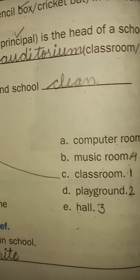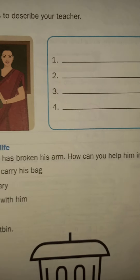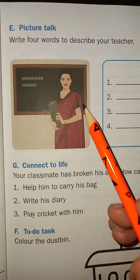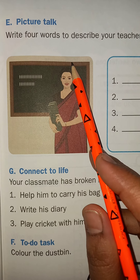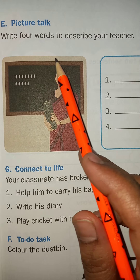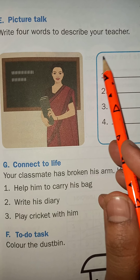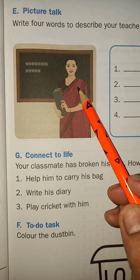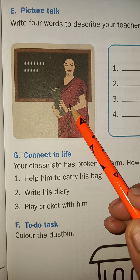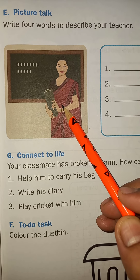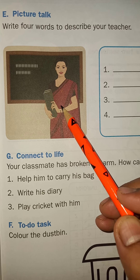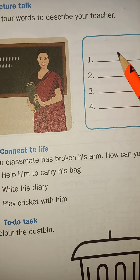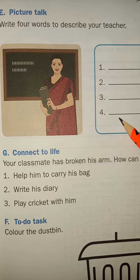Now students, turn to page number 21. They have given a picture talk activity: write four words to describe your teacher. That means you have to write down only four words. It is up to you — what do you want to say about your teacher? Write down only four words here.